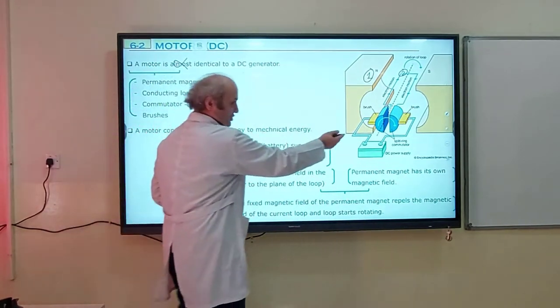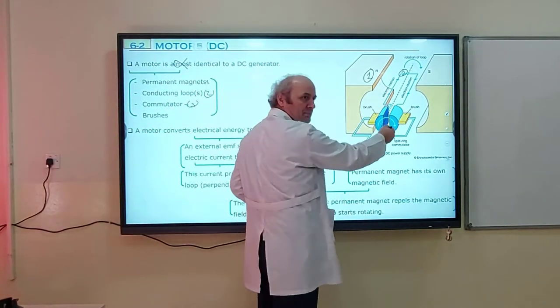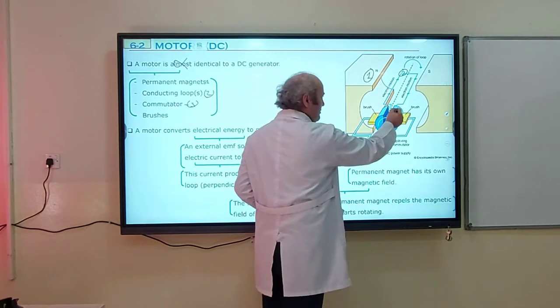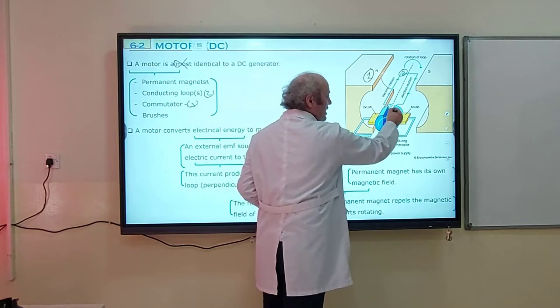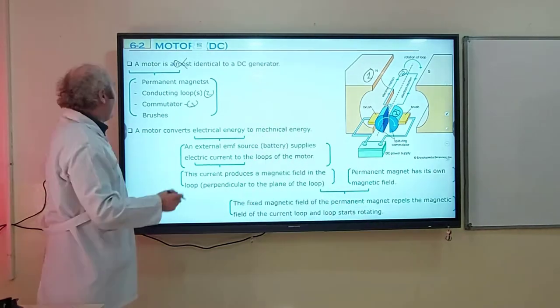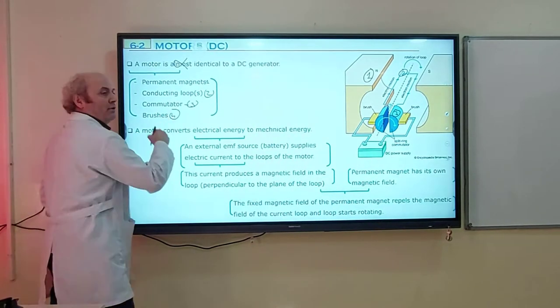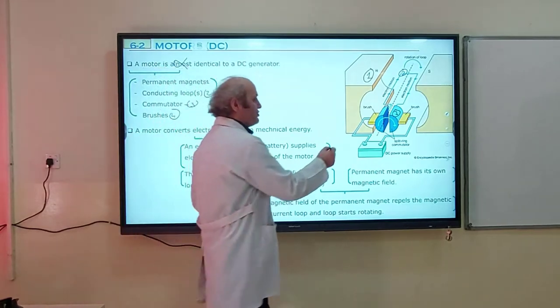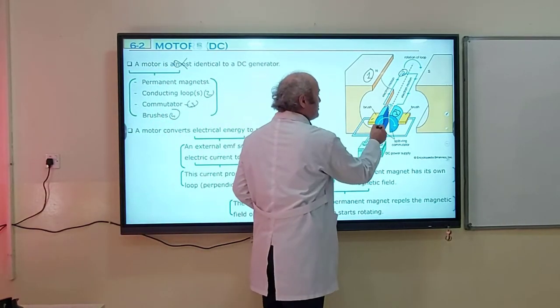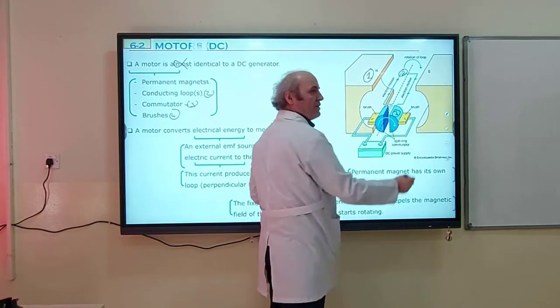There are four components in total. Permanent magnets, conducting loops, commutator with two segments, and brushes. One brush is here and the other brush is right there.